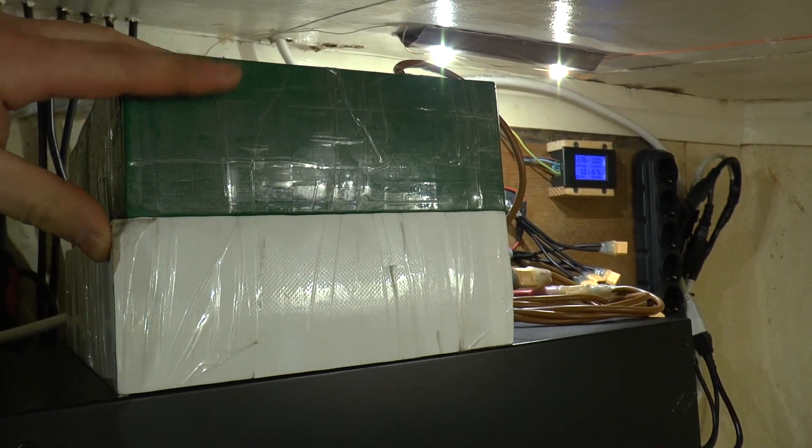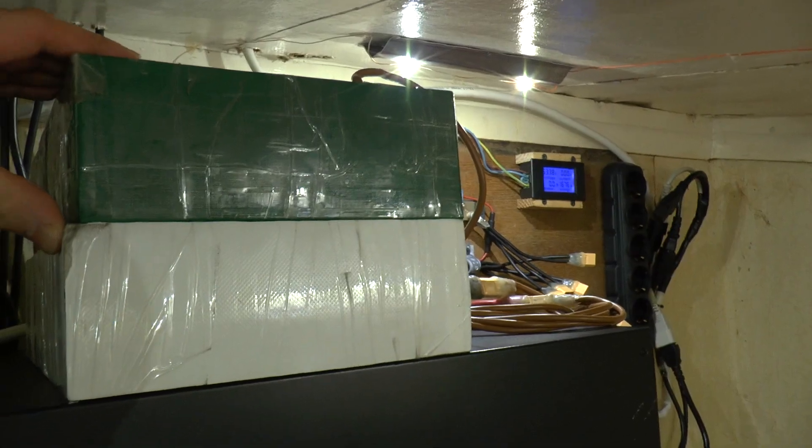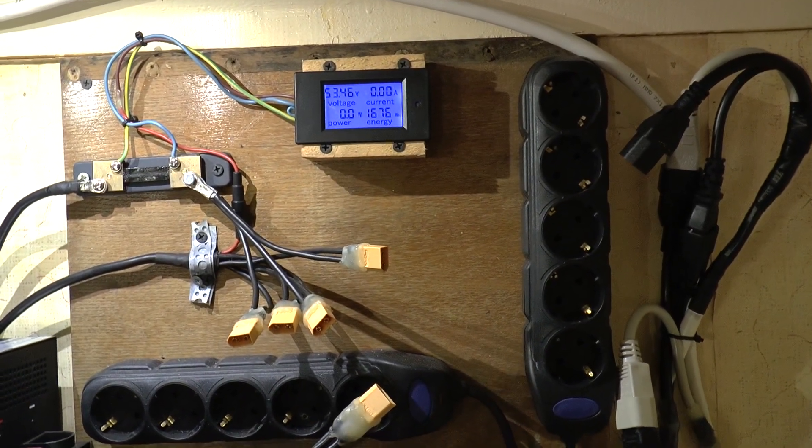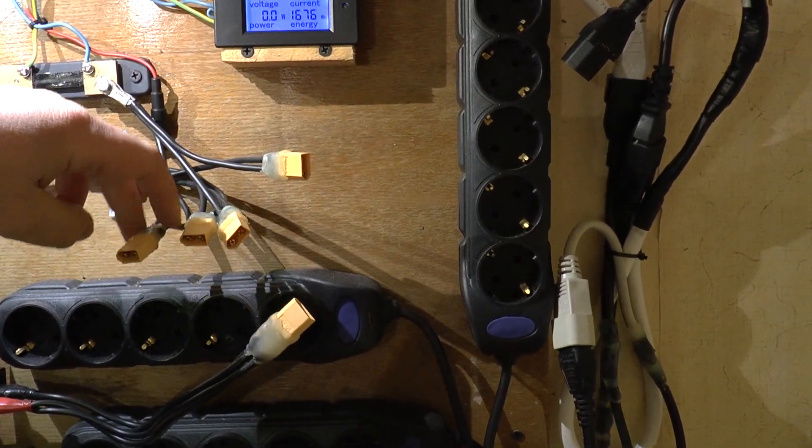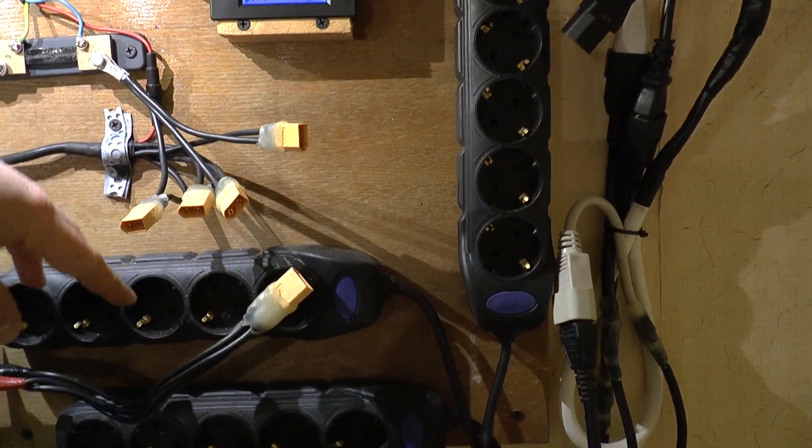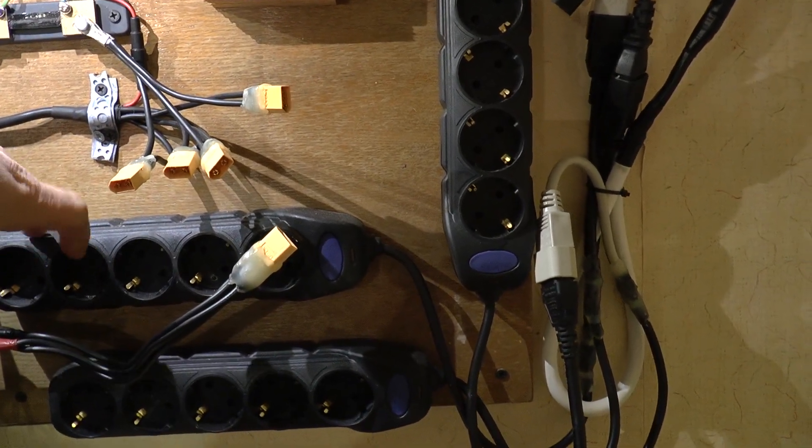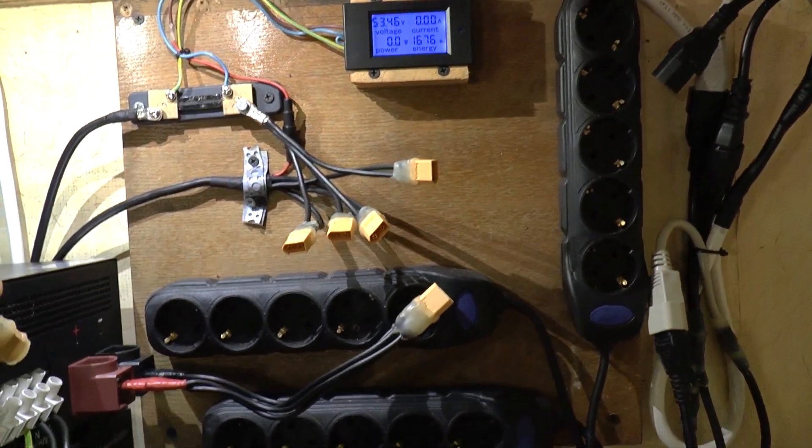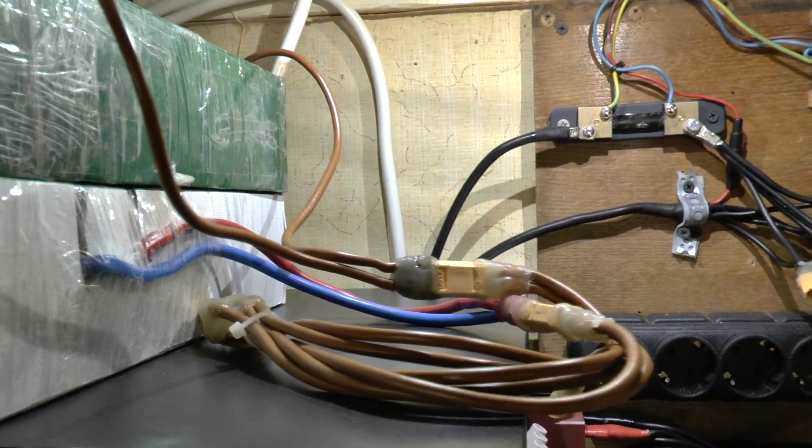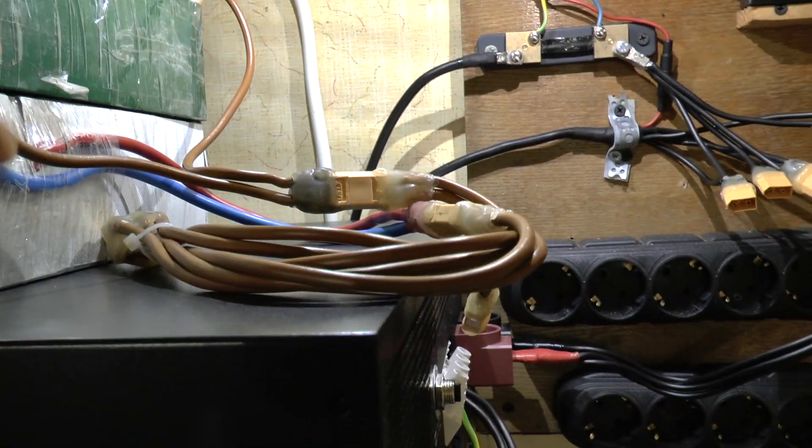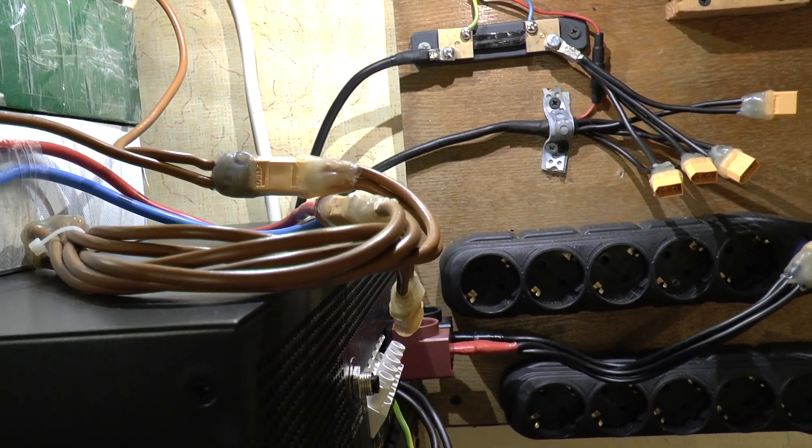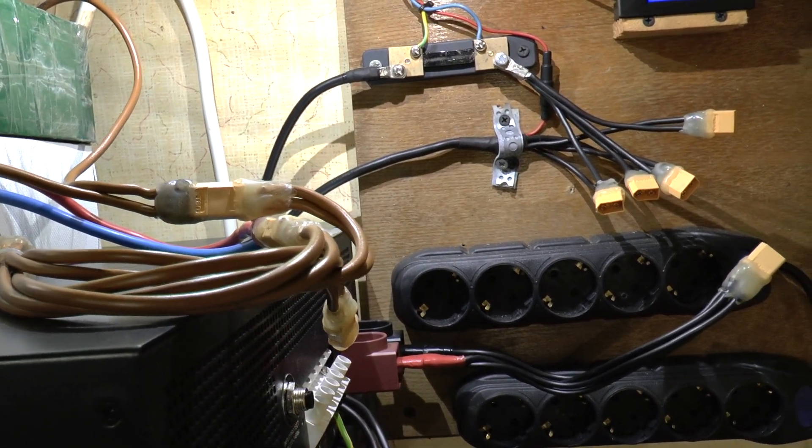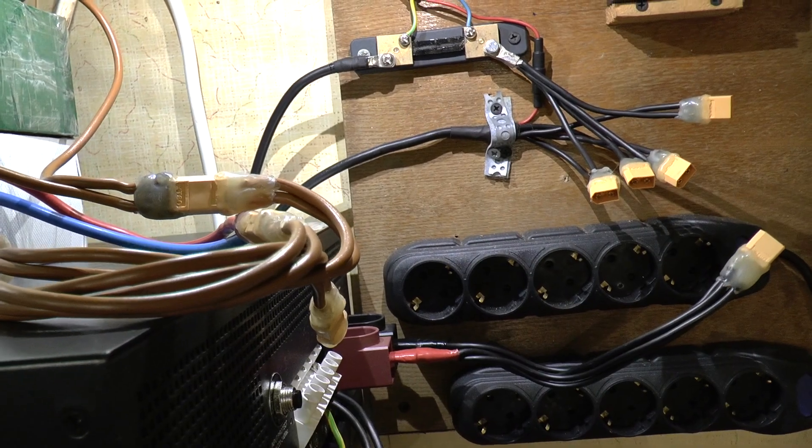I connect these here if I want to charge my off-grid battery from an external source like a generator or something. But I have to consider, if I connect these to the off-grid battery, the voltage must be the same. So if they're not the same, I can use some resistors or something like that to equalize the voltage.